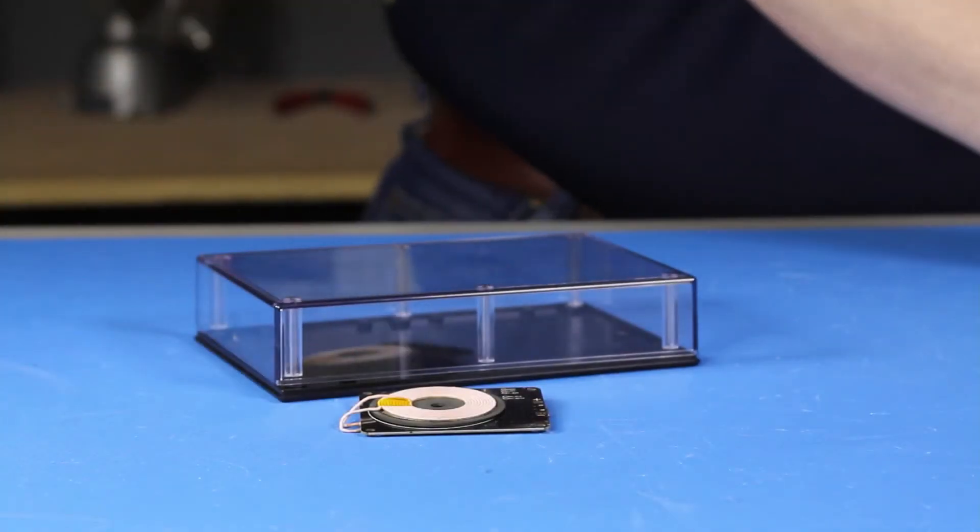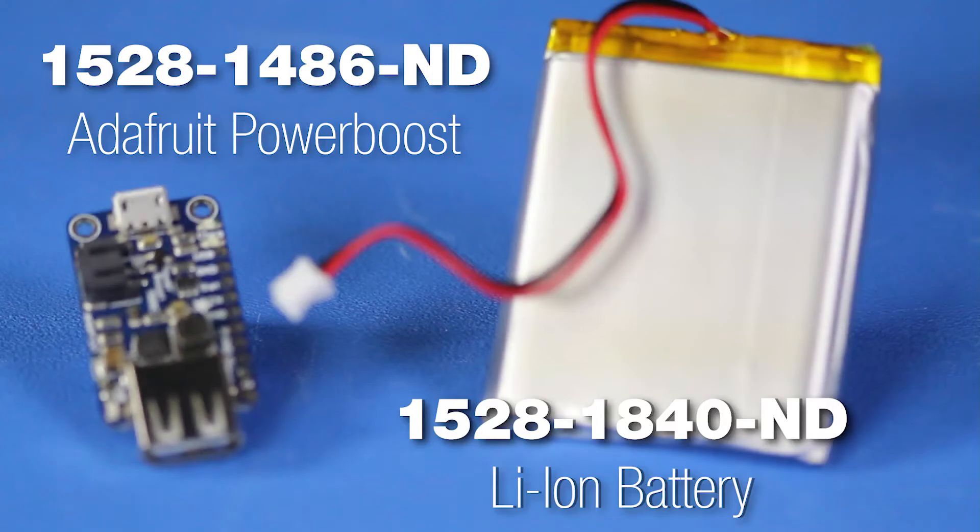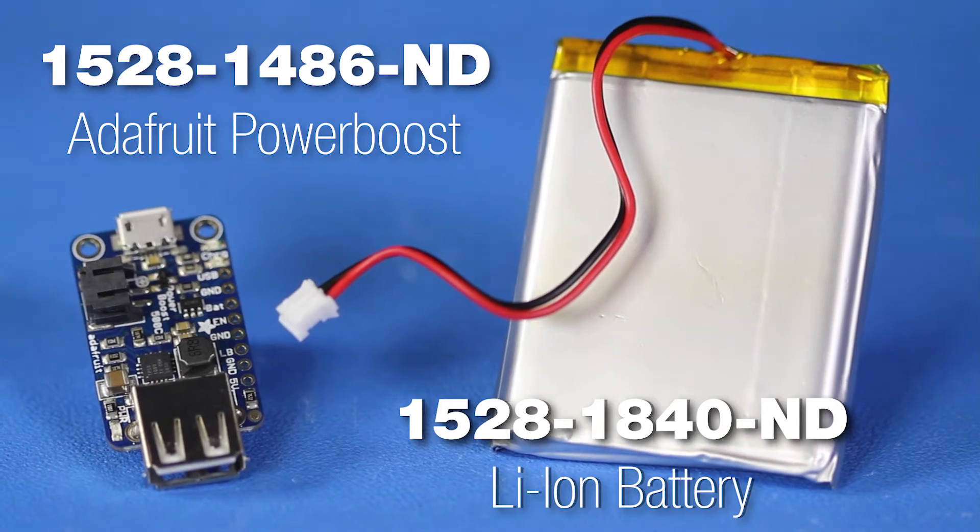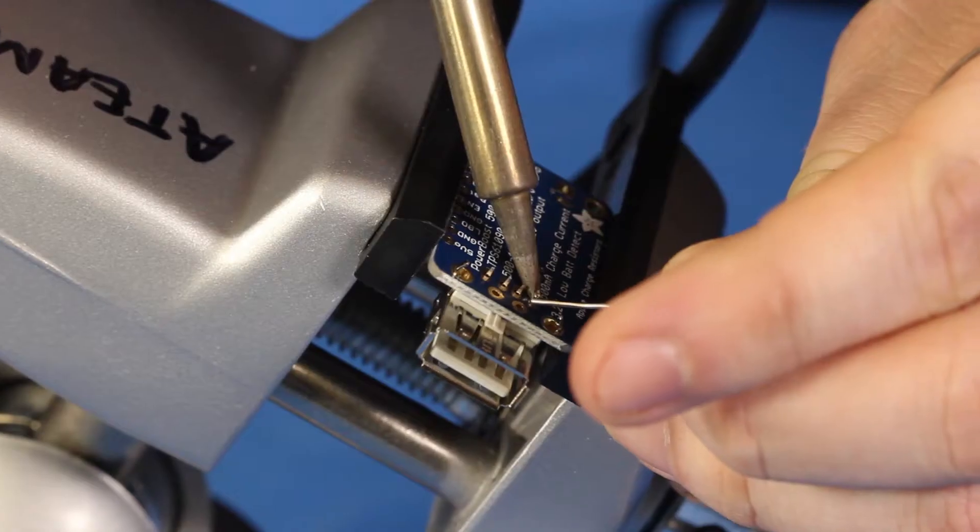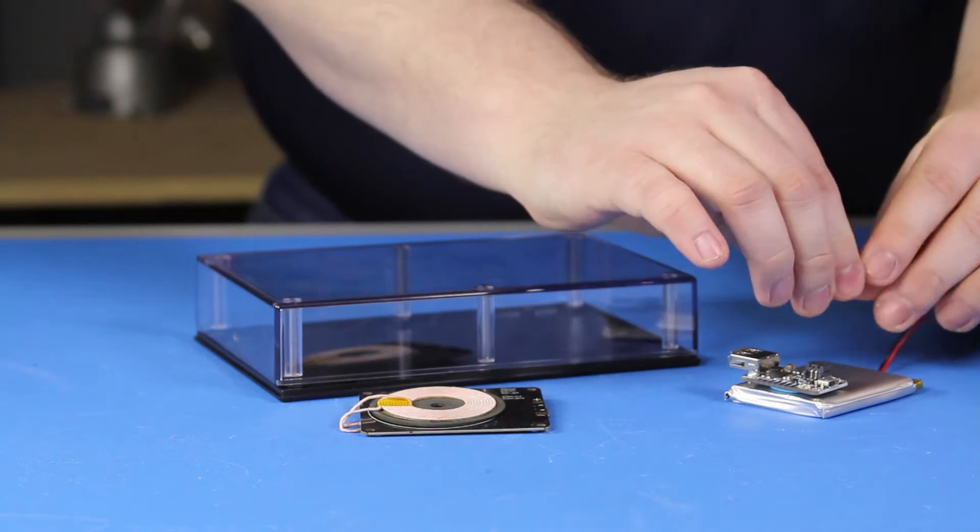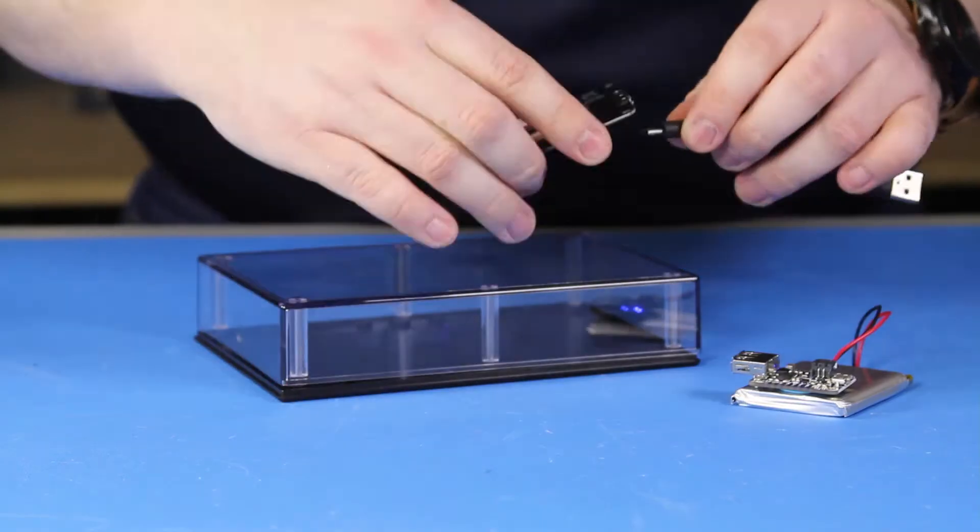To take it a step further, we've made our wireless charger portable by adding an Adafruit Power Boost board and a battery pack. Just solder the USB connector onto the board and then it's just a matter of connecting the pieces together and placing it inside the enclosure.